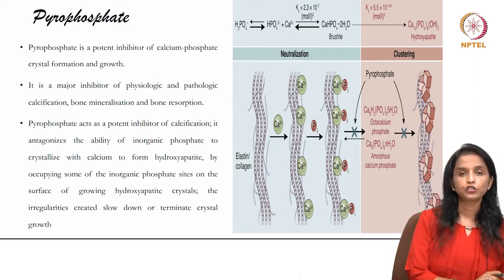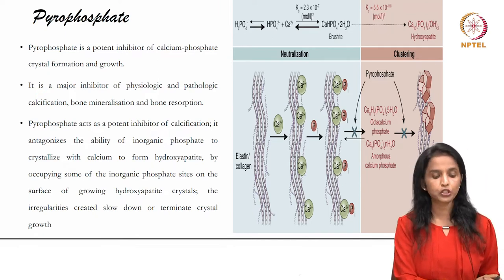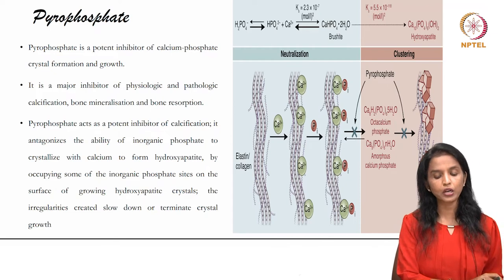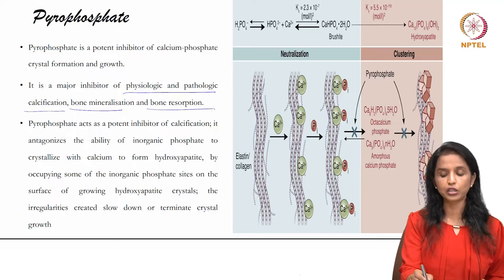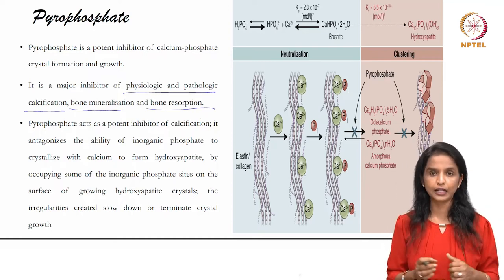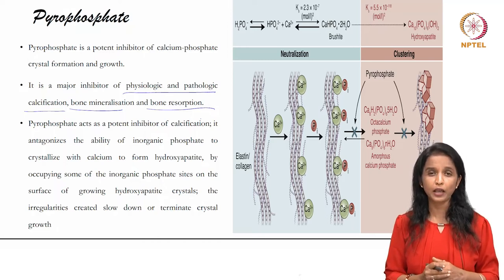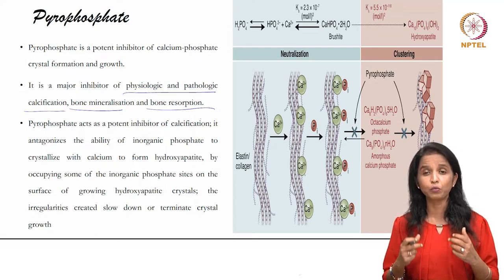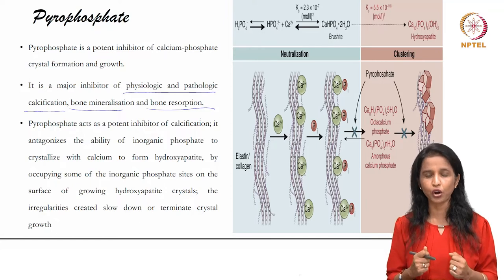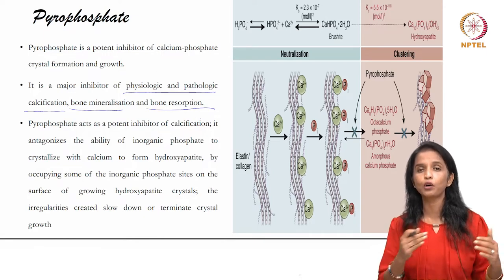Pyrophosphate is a very important inhibitor of mineralization, called the potent inhibitor of calcium phosphate crystal formation and growth. It is the major inhibitor of physiological and pathological calcification, bone mineralization, and bone resorption. We do not want mineralization in areas where soft tissues need to remain soft, so inhibitors like pyrophosphate prevent mineralization in those regions.